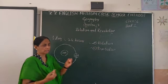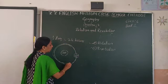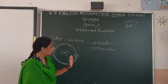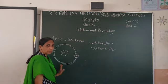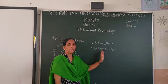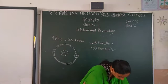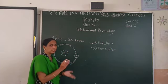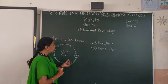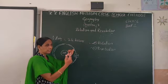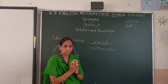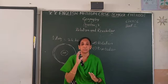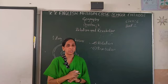When the earth moves and orbits the sun on its own path, that is revolution. When the earth spins on its axis and also orbits around the sun, these two motions work together. Then temperature and weather conditions keep changing.